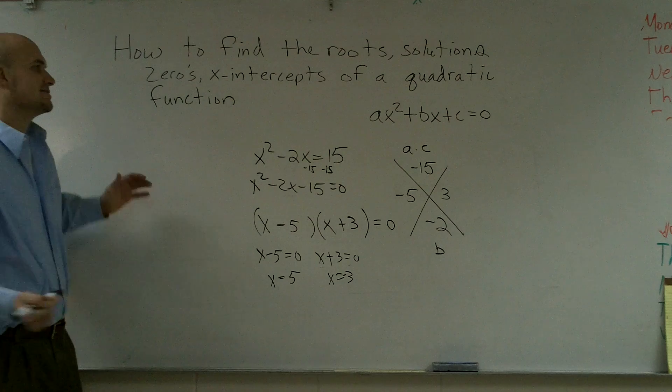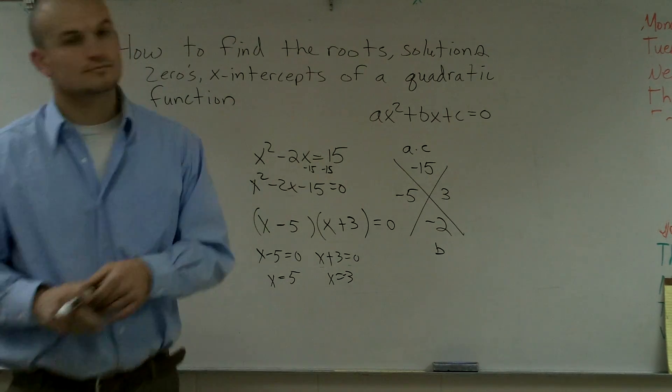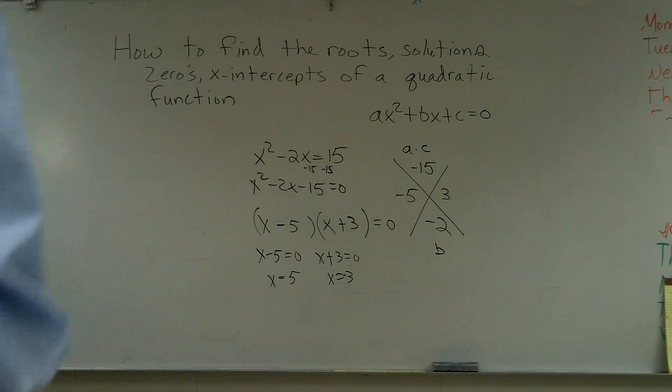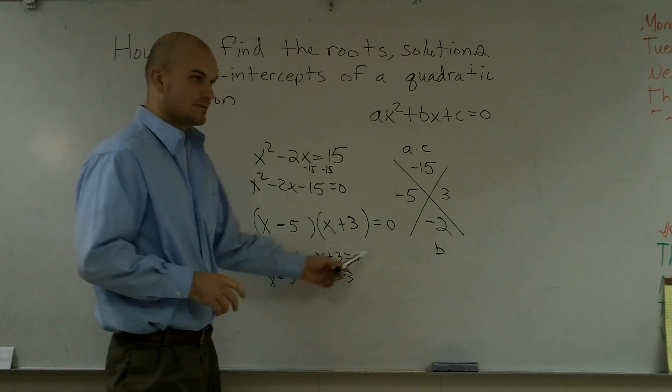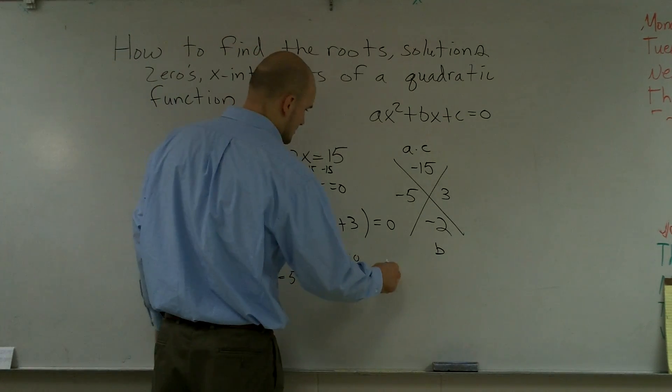So that's how you find the root solutions, zeros, or x intercepts of the quadratic equation. How does x plus 3 equal negative 3? Because you subtract 3 on both sides. You subtract 3 on both sides. Oh, shit.